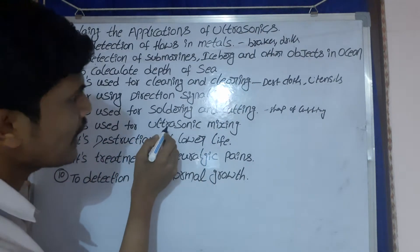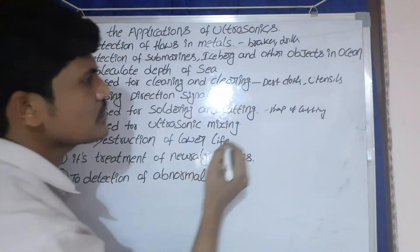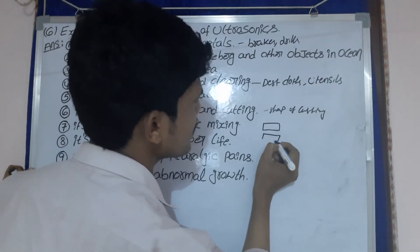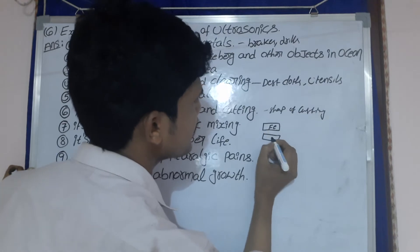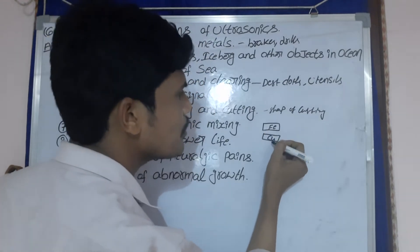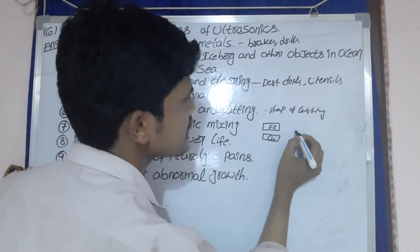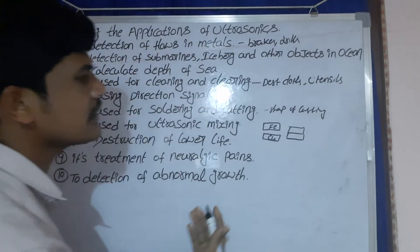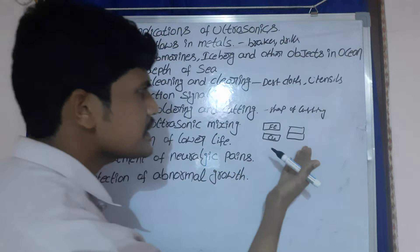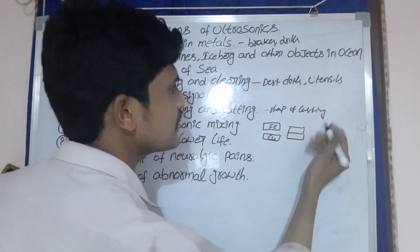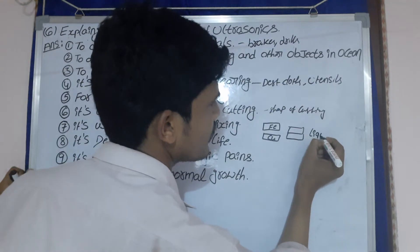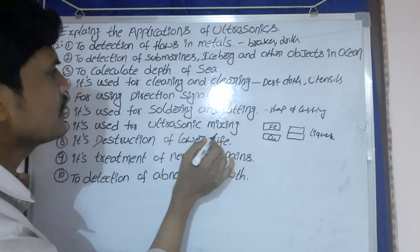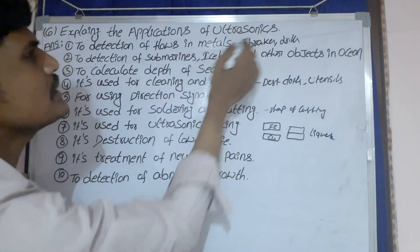Next one: it is used for ultrasonic mixing. Two metals — first one ferrous, second one copper — are solid materials that do not normally mix. They are converted into liquid state, and then these two materials are mixed using ultrasonic waves.